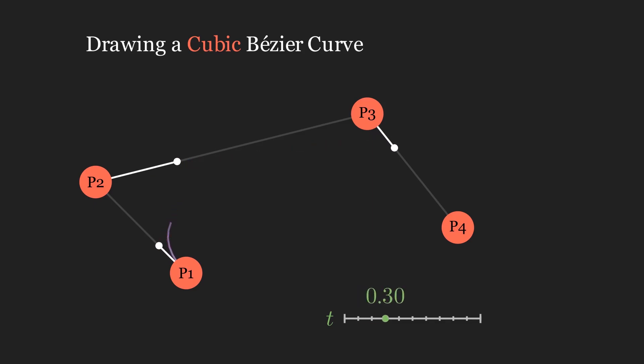This is a principle that applies to any number of control points. Form the first layer of linear interpolations. Interpolate between that first layer to form a second layer. And keep doing that for every layer after until you only have one point left.